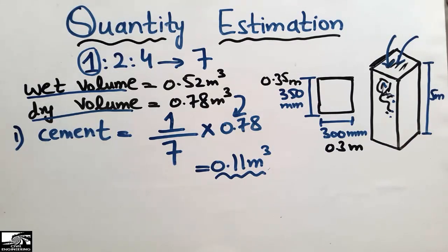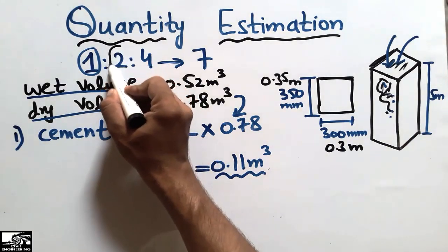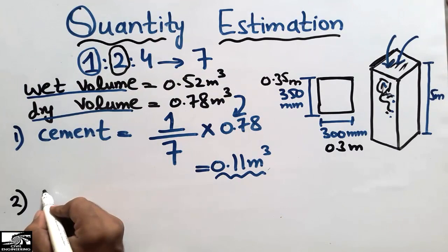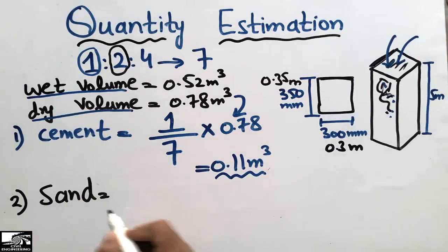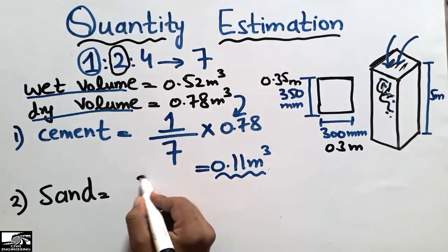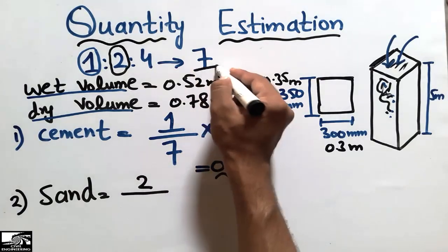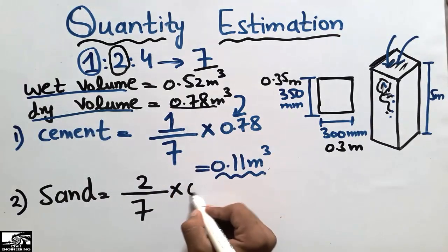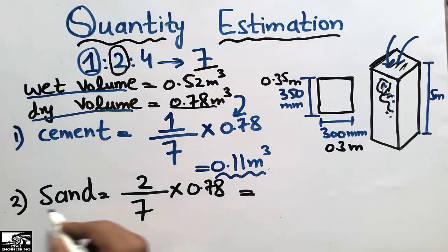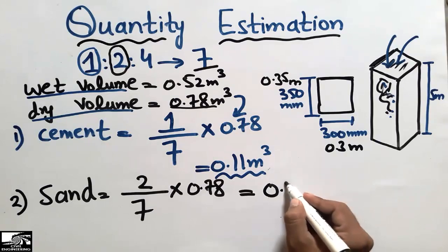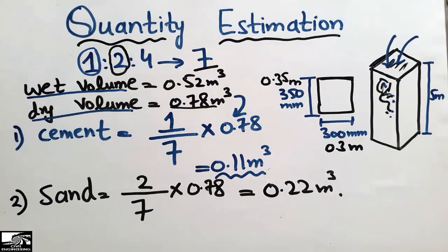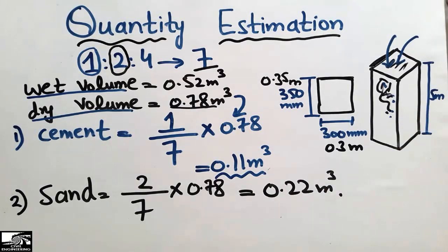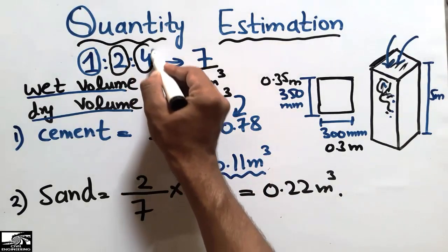The quantity of fine aggregate, or sand, can also be found easily. We take the sand ratio of 2, divide it by the total ratio of 7, and multiply by the dry volume of 0.78. The quantity of sand comes out to be 0.22 cubic meters used in this concrete column.